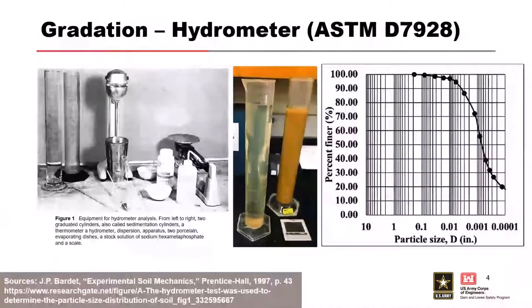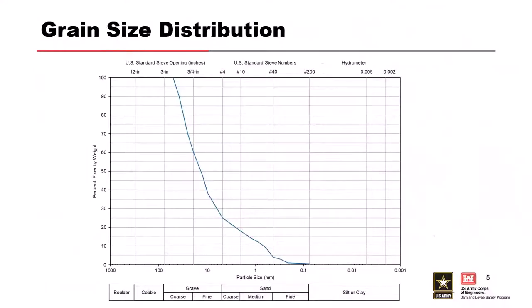Hydrometer tests are really important if you have a lot of fine-grain materials at your site, to identify how much clay and how much silt is part of that fine-grain material. A typical gradation curve has percent finer by weight on the Y-axis as a percentage, and particle size in millimeters on the X-axis, with sieve designations along the top.